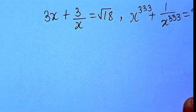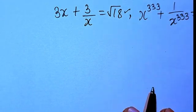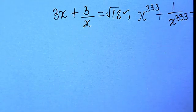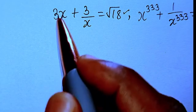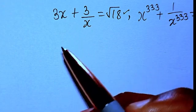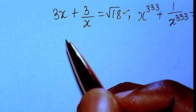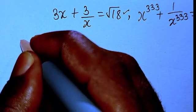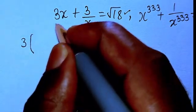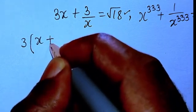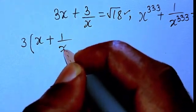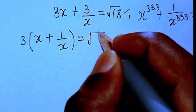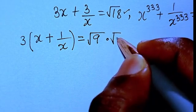Stay focused and see what we are going to do. Let me write the left hand side as a single fraction. You can see I have 3 here and 3 here, so 3 is common. We factorize: 3(x + 1/x) = √18. Now √18 can be split as √9 multiplied by √2.